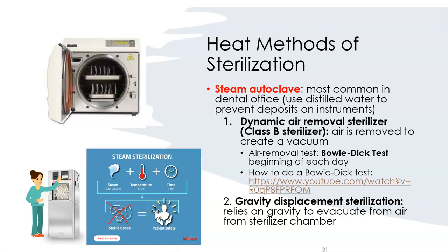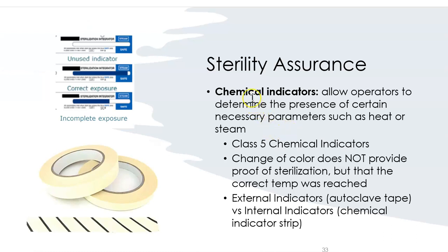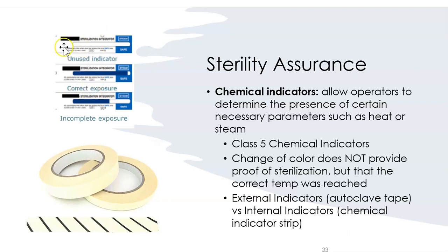Chemical indicators tell us whether an instrument was exposed to the correct heat during sterilization. Class 5 chemical indicators and external indicators like autoclave tape change color — turning black or reaching the blue area — when the correct temperature has been reached. These indicator strips are placed inside instrument bags facing outward so you can see them. If the strip reaches the blue line, the instrument is safe; if incomplete, it was not properly sterilized.